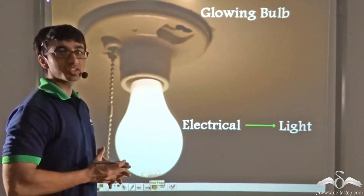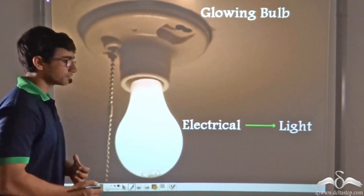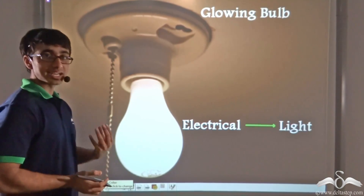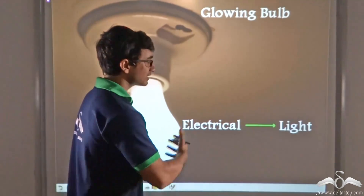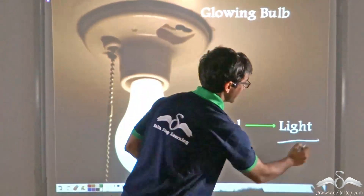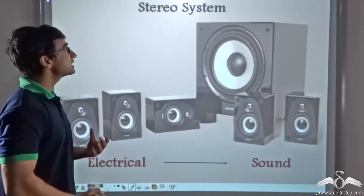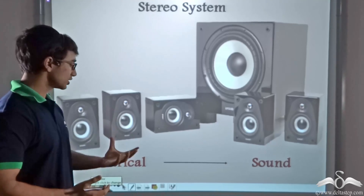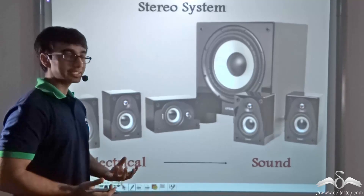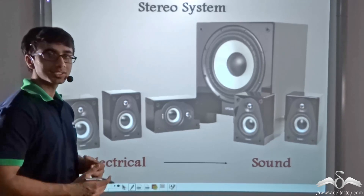Let us see how interconversion takes place in some common appliances. A bulb at home glows because electricity comes in and it gives us light — so a glowing bulb converts electrical energy into light energy. In a sound system or stereo system which works on electricity, electrical energy is taken in and converted into sound energy in order to play your favourite song.